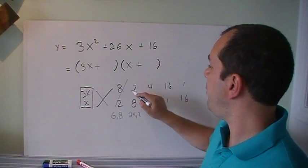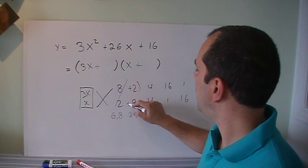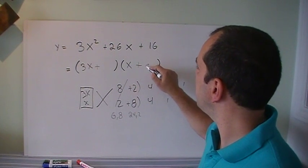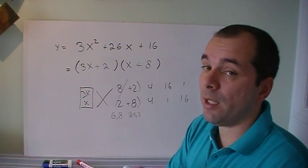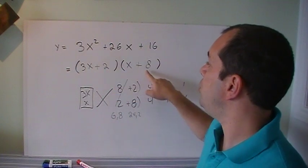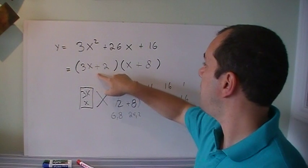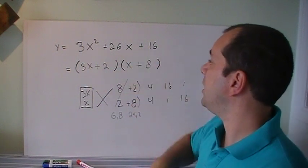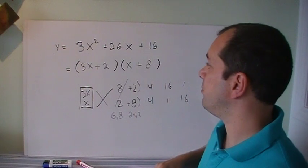And now, I found out that if it's 3x plus 2, and x plus 8, I get that answer. Now, like always, I'll check. 3x times x is 3x squared. That's good. 2 times 8 is 16. That's good, too. The inner 2x plus 24 gives me 26x, which means I got the right answer. And that's good.